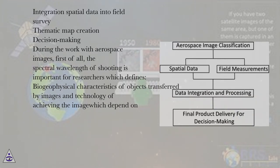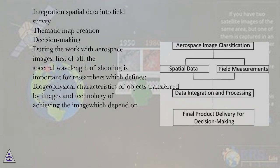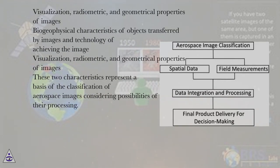During the work with aerospace images, first of all, the spectral wavelength of shooting is important for researchers, which defines: biogeophysical characteristics of objects transferred by images and technology of achieving the image, which depend on visualization, radiometric, and geometrical properties of images.